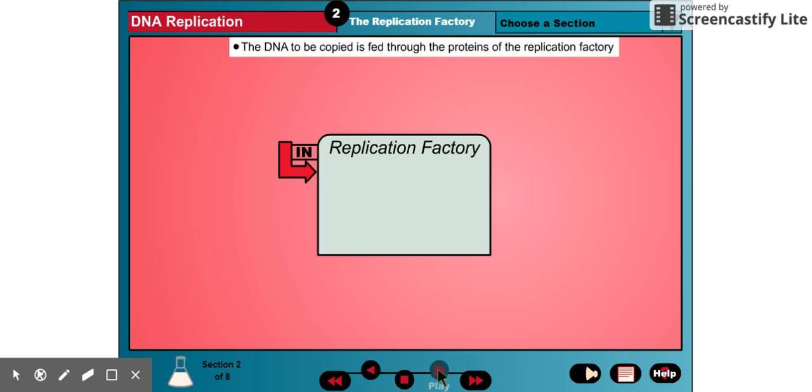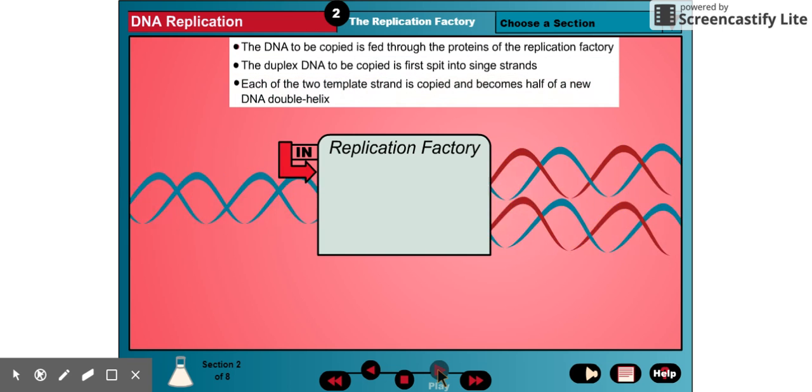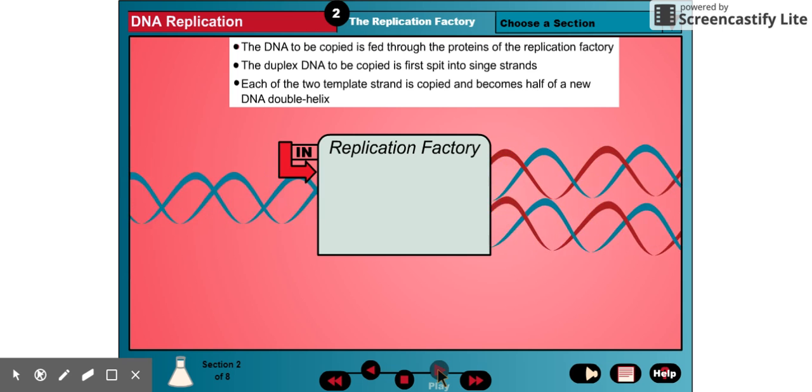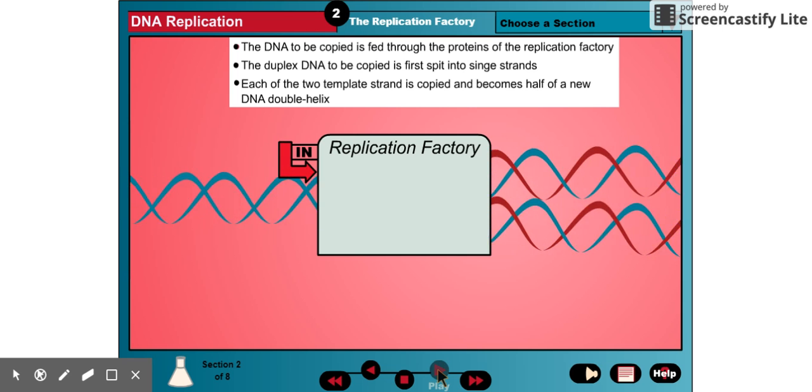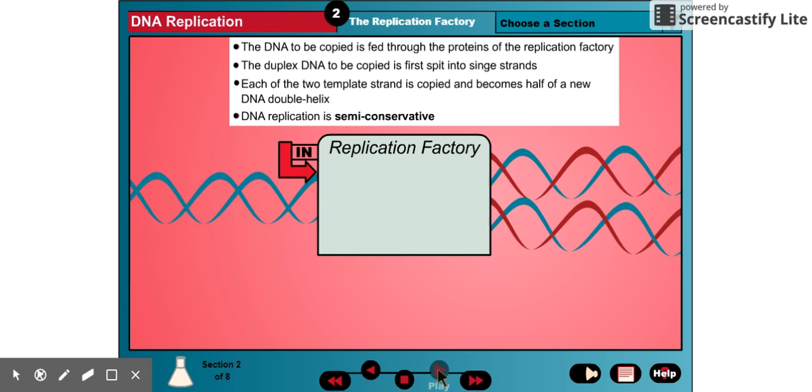The DNA to be copied is fed through the factory much as a reel of film is fed through a movie projector. The incoming DNA double helix is split into two single strands and each original single strand becomes half of a new DNA double helix. Because each resulting DNA double helix retains one strand of the original DNA, DNA replication is said to be semi-conservative.